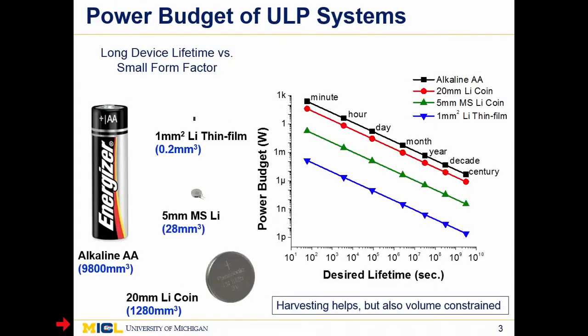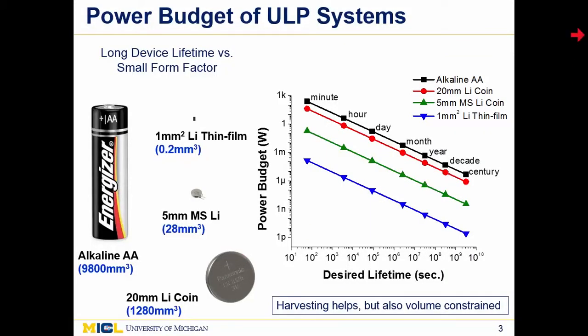Taking these trends together, we expect wireless sensing systems with severely limited power budgets to proliferate in the coming decade. To help define the 'U' in ULP — namely, how low power are we really talking — we quantify the expected power budgets in very small sensing systems. In the plot at right, average power budget in log scale is on the y-axis and lifetime of the system in log scale is on the x-axis. There are four curves shown, each using different energy sources ranging from conventional large double-A batteries down to one square millimeter thin film lithium batteries.